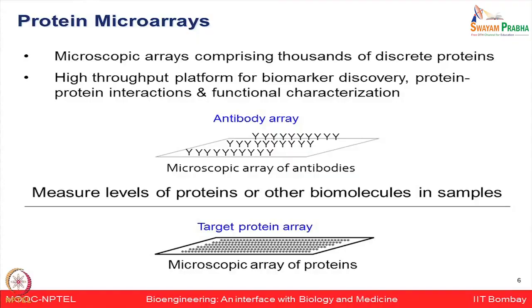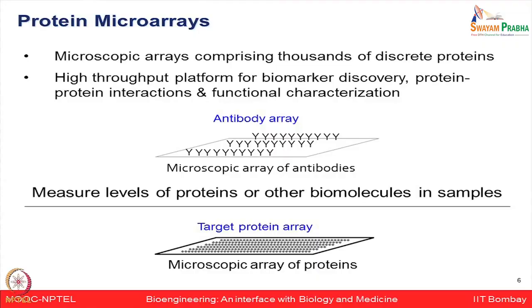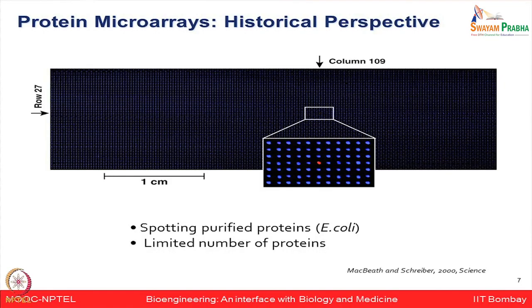If antibodies are immobilized on the array surface, that is an antibody array which can be used to measure the abundance of a biomolecule. For example, if you are looking at the level of a given protein for which you have an antibody, you can pass your biomolecule on the chip and measure the concentration of that protein using this antibody-based approach. There are also target protein arrays where functionalized proteins are printed on the array surface. Historically in 2000, Gavin Macbeth first showed it is possible to print proteins on a chip, establishing that protein microarrays in principle are achievable.